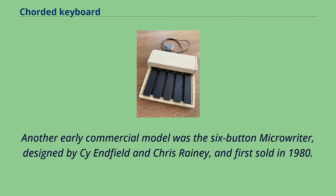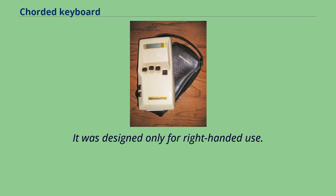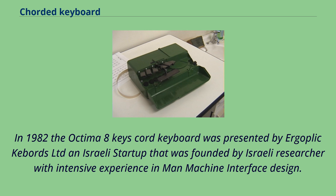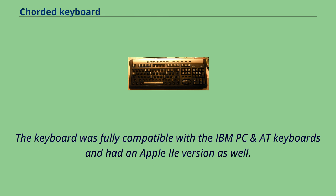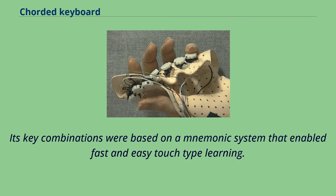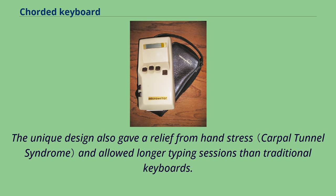Microwriting is the system of chord keying based on a set of mnemonics, and was designed only for right-handed use. In 1982, the Optima 8-Keys Chord keyboard was presented by Ergoplik Keyboards Ltd, an Israeli startup founded by an Israeli researcher with intensive experience in man-machine interface design. The keyboard had eight keys — one for each finger — plus three additional keys enabling production of numbers, punctuation, and control functions. It was fully compatible with the IBM PC and had an Apple IIe version, with key combinations based on a mnemonic system for fast and easy touch-type learning. It was multilingual, supporting English, German, French, and Hebrew.